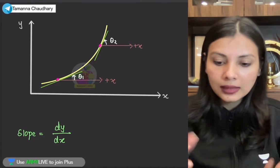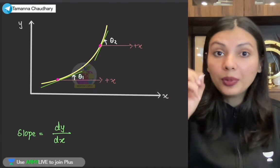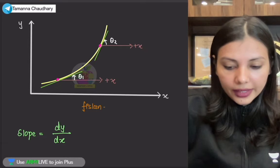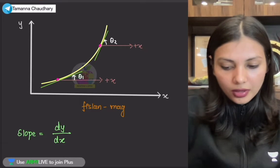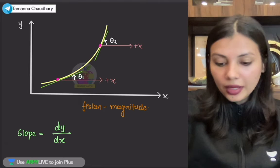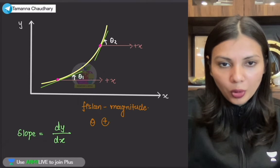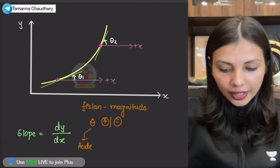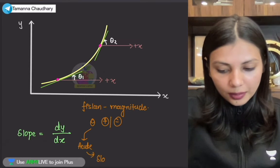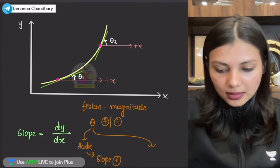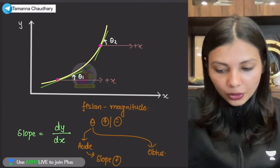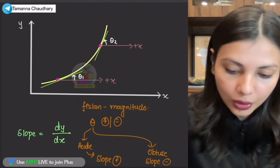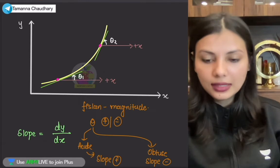Abhi tak ham ye waala funda use kar rahe thay. Abki baar ham alag funda use karenge — abki baar ham log use karenge ye waala funda ki tumhye fisslan magnitude dega. Dhyan se dekho — fisslan tumhye magnitude dega. Aur jo tumhaare paas slope angle hai, woh tumhye positive ya phir negative bataayega. Ki maan lo agar woh slope angle tumhaare paas acute hai, to I will say tumhaare paas jo slope hai woh positive hai. Aur agar woh slope angle tumhaare paas obtuse hai, to tum bol sakti ho ki yahaan par jo tum log slope dekh rahe ho woh negative hai.